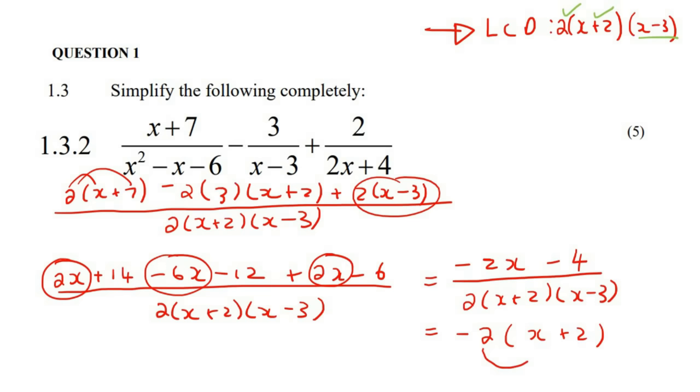Now, the reason I did that is because if you now look at the bottom, we have things that can cancel out. So here we're going to have those cancel out. And the 2s can also cancel out.